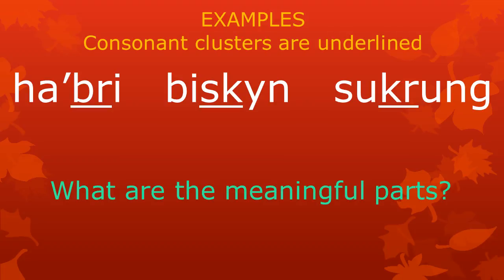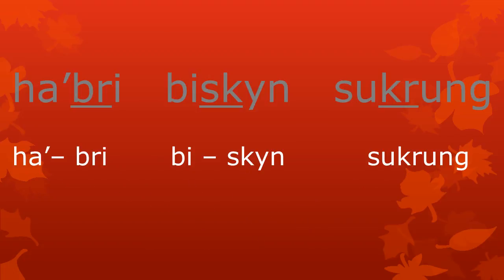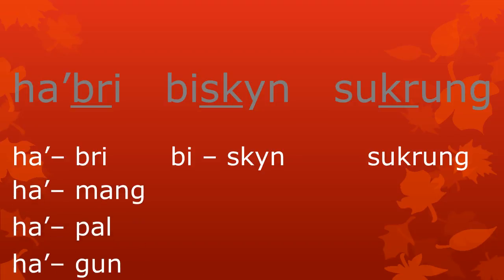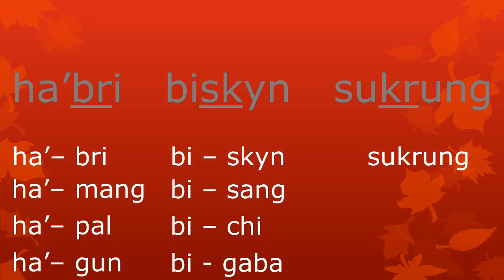But what are these meaningful parts? Here you see an analysis of three words. The word HABRI has a meaningful part HA and another meaningful part BRI. The word BISKIN has the meaningful parts BI and SKIN. The word SUKRUN is just one meaningful part by itself. The different meaningful parts can be combined with other meaningful parts to make different words. In HABRI, the parts HA and BRI can be separated to form words like HAMANG, HABAL, and HAGUN. The parts in BISKIN can be separated to make BISANG, BICI, and BIGABA. The word SUKRUN cannot be broken up — the whole word is just one meaningful part.